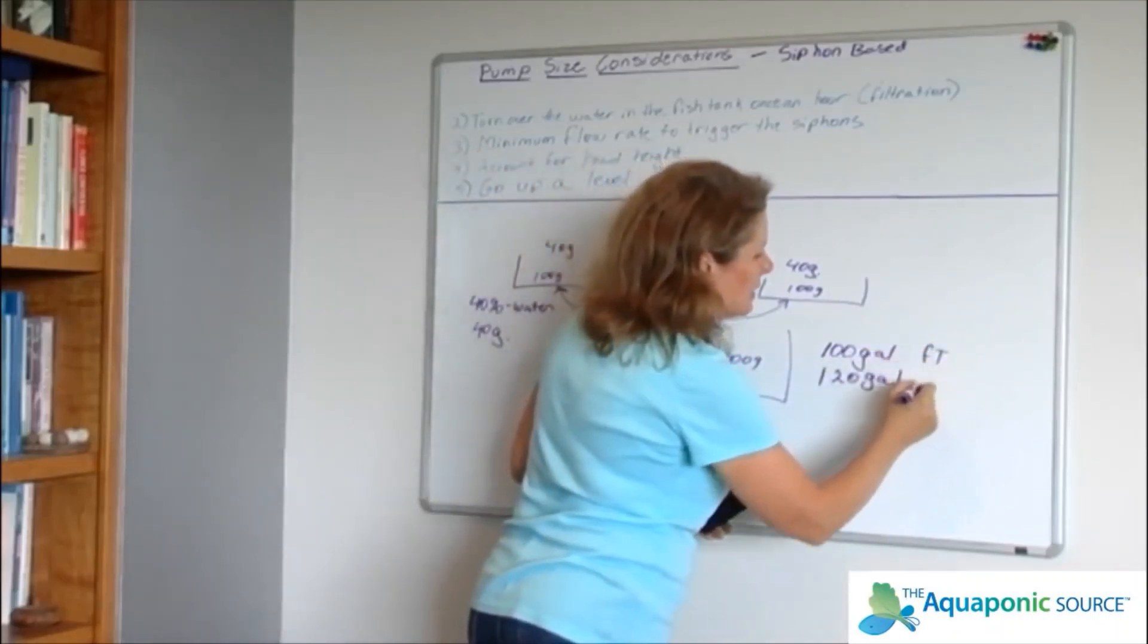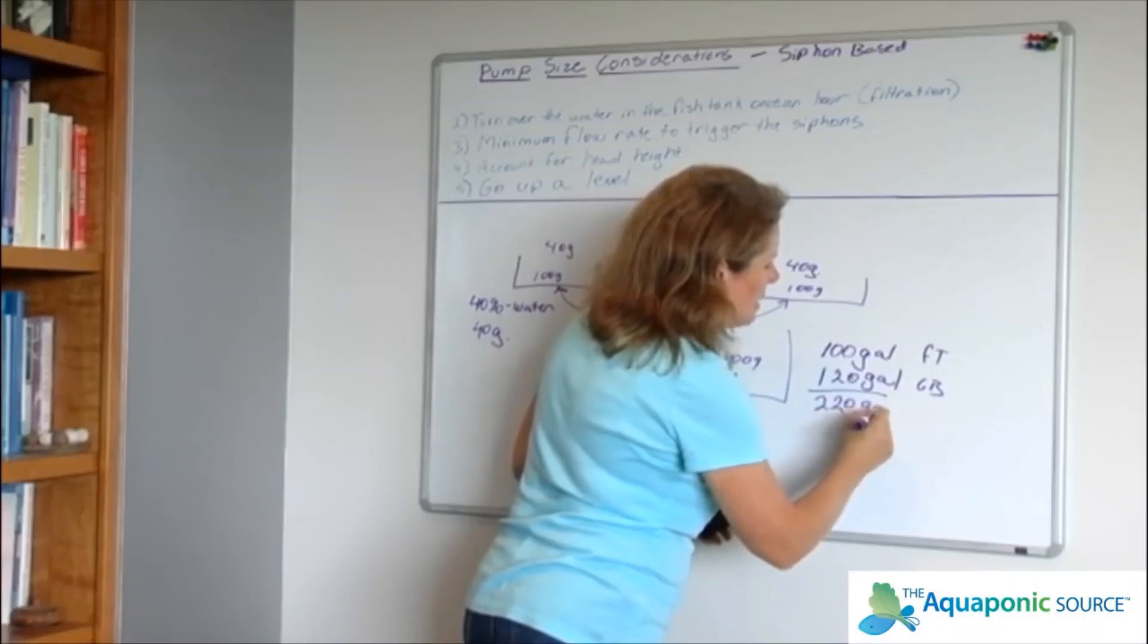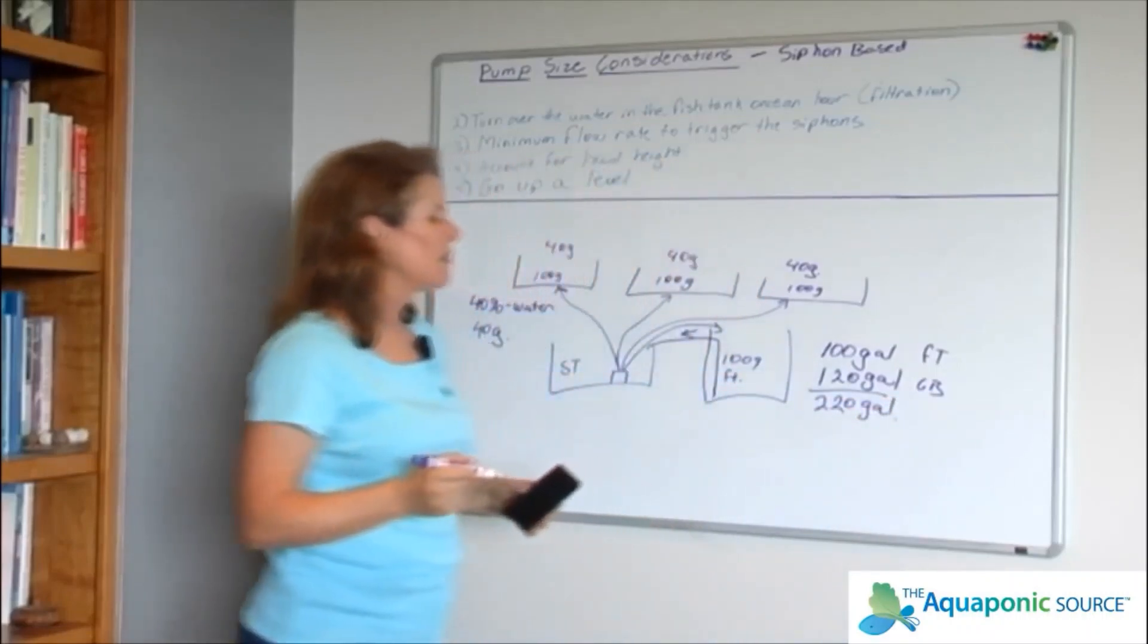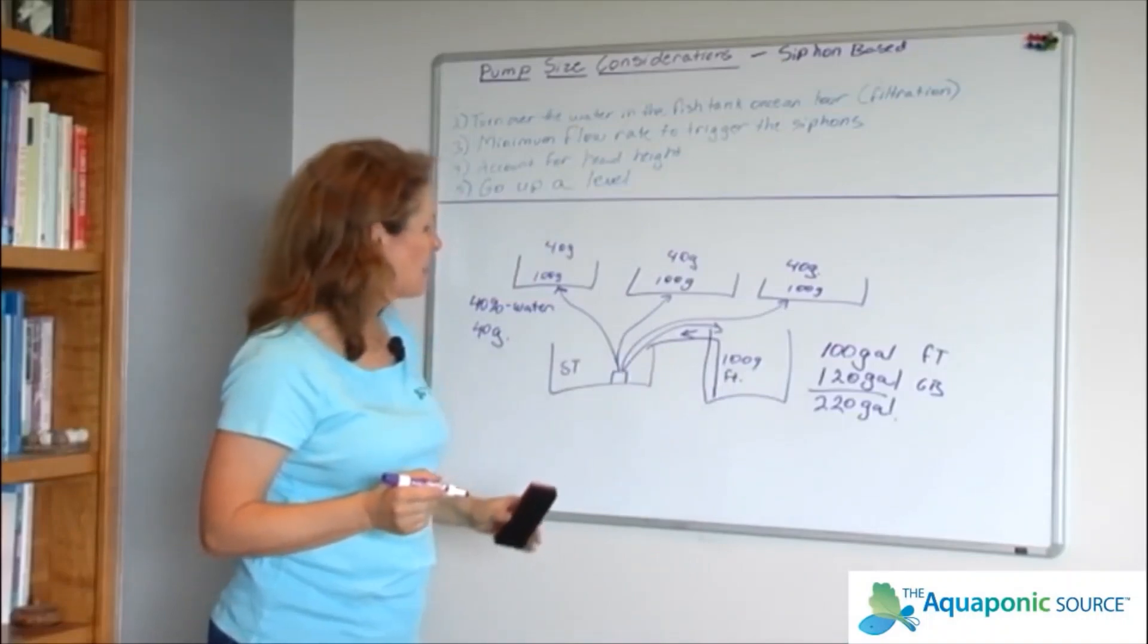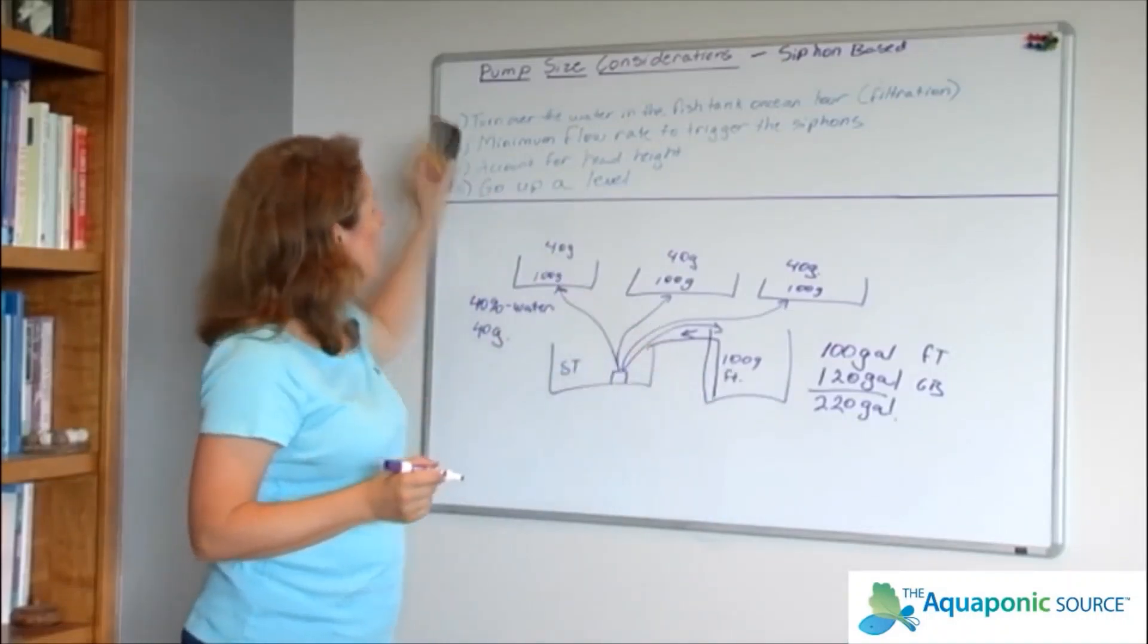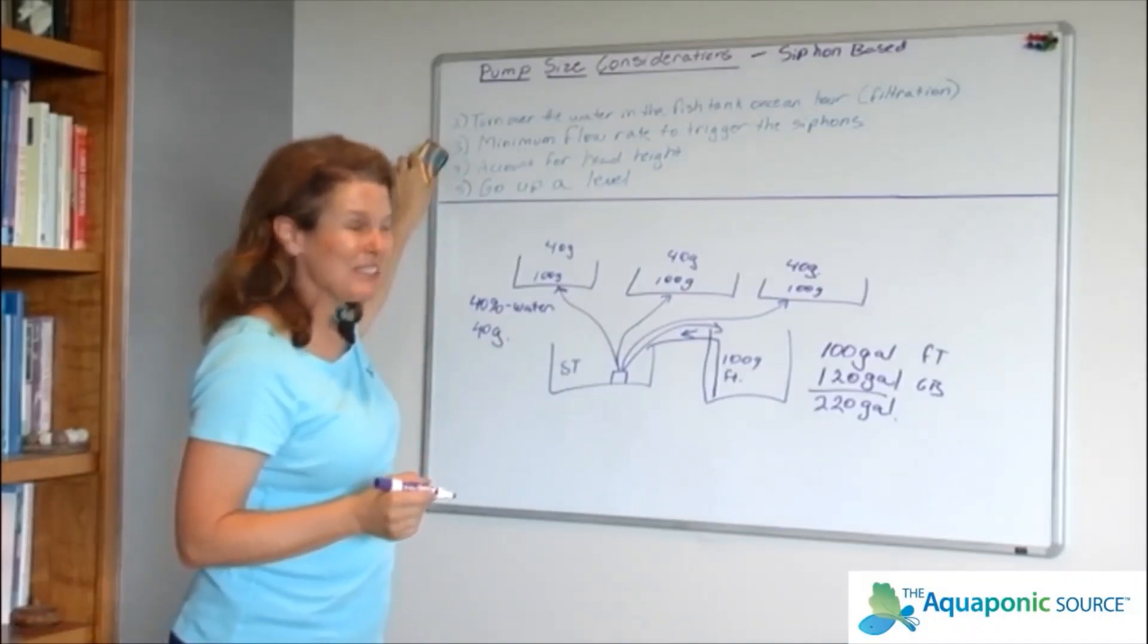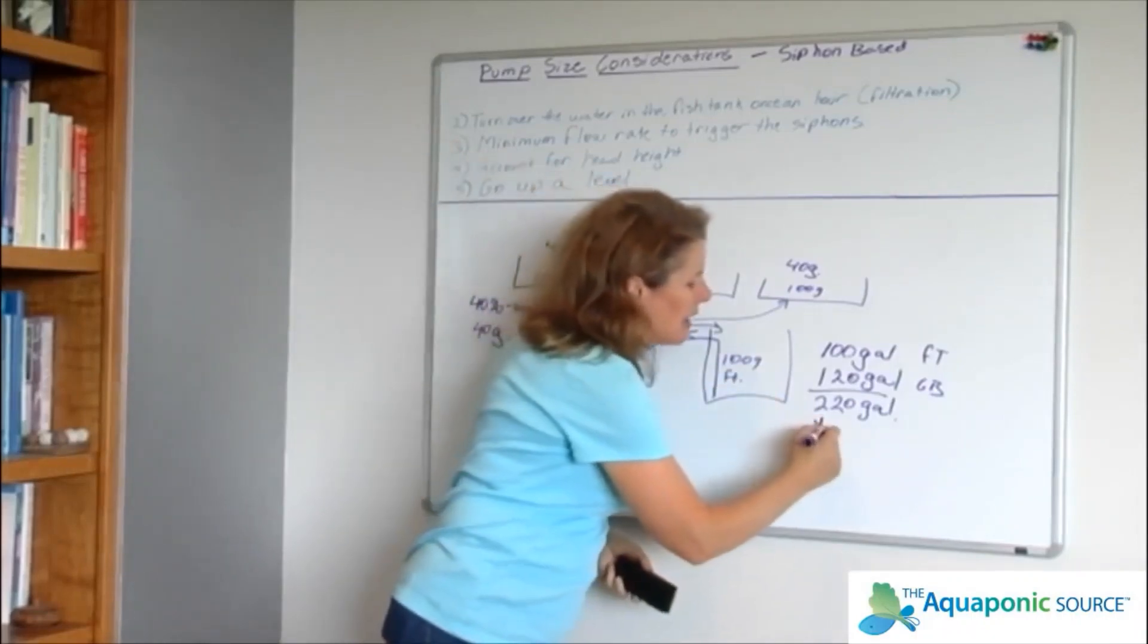This is the fish tank, this is the grow bed. 220 gallons is how much I would need to move accounting for head height, because that's the other thing. But we're starting there. That's how much I would need to move if I didn't have to worry about my siphons. So 220 gallons plus head height, let's say at this point we're up to a 400 gallon per hour pump.